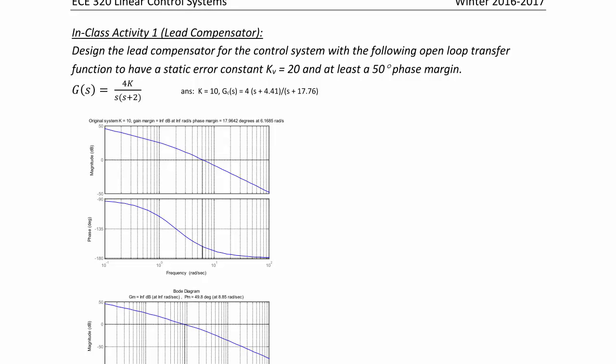Step 1 is to determine the gain k. Recall that kv is equal to the limit as s approaches 0 of s g of s, or the limit as s approaches 0 of 4k over s plus 2, and we need to design so that equals 20. So 4k over 2 equals 20, or k is equal to 10.